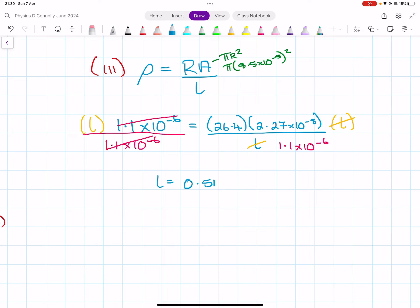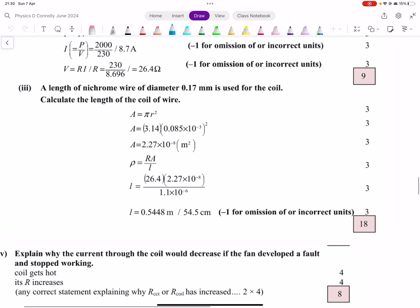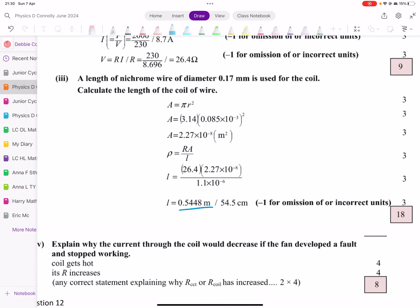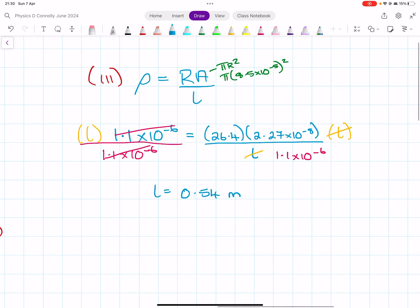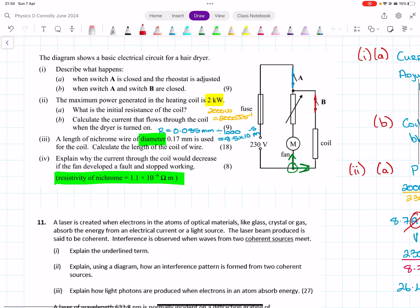I'm getting 0.54 meters. There was nine marks for calculating the area, and then the other nine for calculating the length. It was three here, three here, and then three for this one—then three for this formula, three for this formula, and three for your answer, making 18 in total. Hopefully you got it.